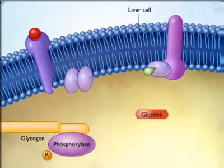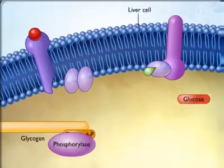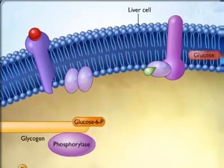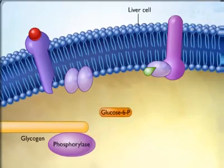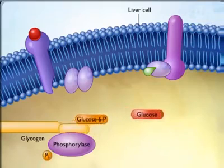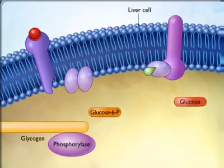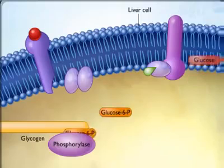Through this multi-step mechanism, epinephrine causes the liver to secrete glucose into the blood during the fight-or-flight reaction.